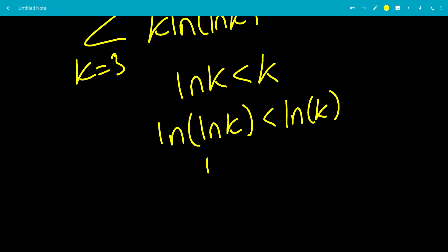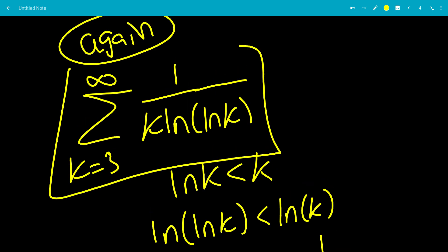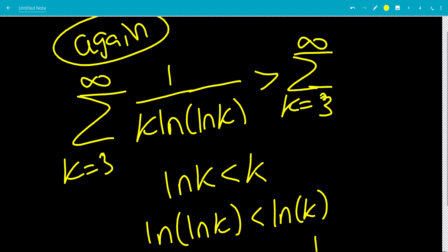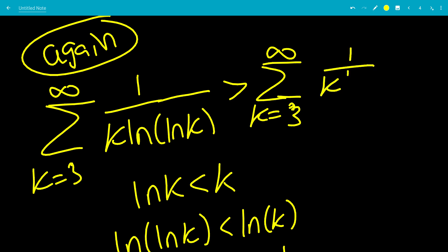We can take the reciprocal. So 1 over ln of ln of k. We have to change the sign of the inequality. So from less than to greater than 1 over ln of k. So this sum right here is what we started with. This is greater than the sum from k equals 3 to infinity of 1 over k times ln of k.